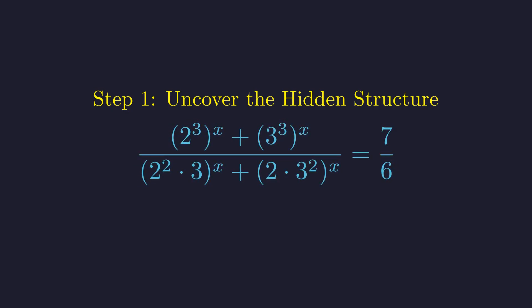Now we can use the power rule to reorganize these exponents in a much more revealing way. And look what emerges! Everything is now built around two fundamental pieces, 2^x and 3^x.